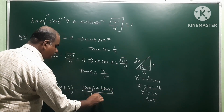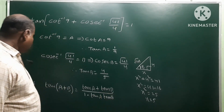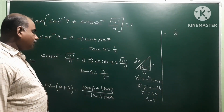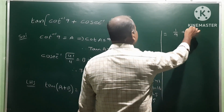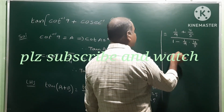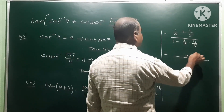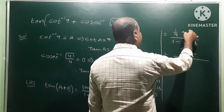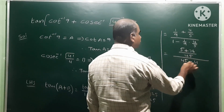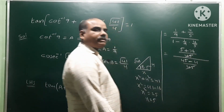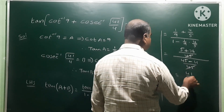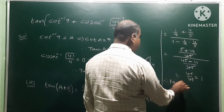Substituting the values: tan(a) = 1/9 and tan(b) = 4/5. Taking LCM in numerator and denominator — LCM of 9 and 5 is 45 — the numerator becomes (5 + 36)/45 = 41/45, and the denominator becomes (45 - 4)/45 = 41/45. So 41/41 cancels and we get 1.